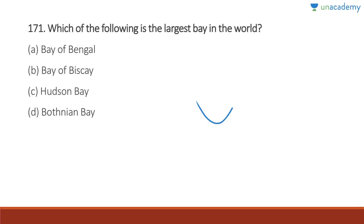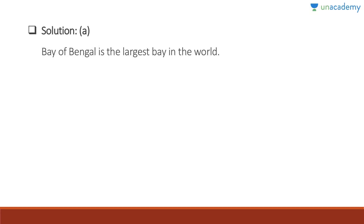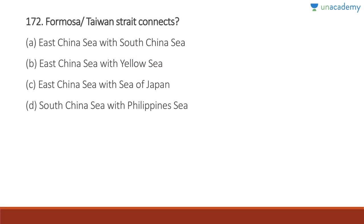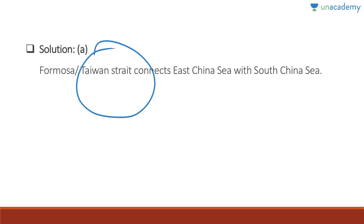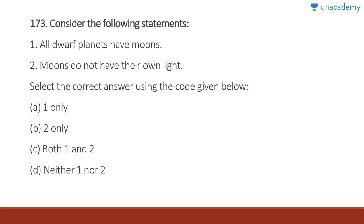Question 171: The largest bay in the world is the Bay of Bengal. Question 172: The Formosa or Taiwan Strait connects the East China Sea with the South China Sea. Answer is A. Question 173: All dwarf planets have moons — absolutely wrong; even regular planets like Mercury and Venus do not have moons. Moons do not have their own light — absolutely correct; moons, like planets, reflect the light of the sun. Answer is B, two only.